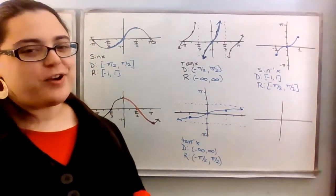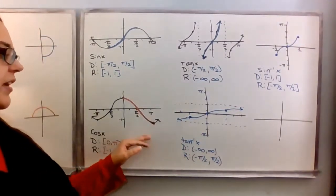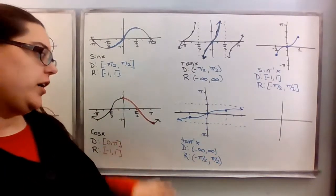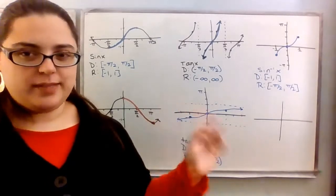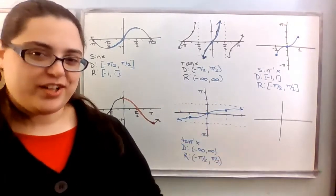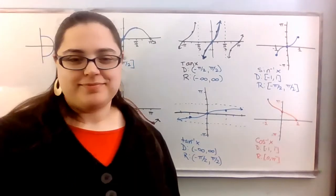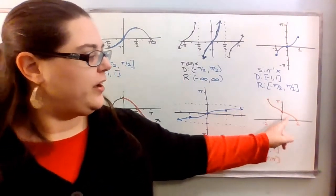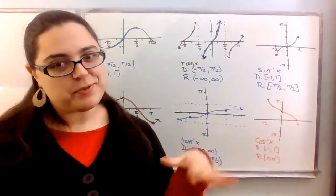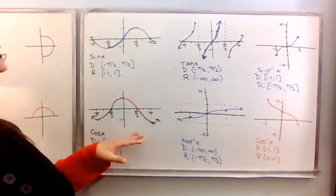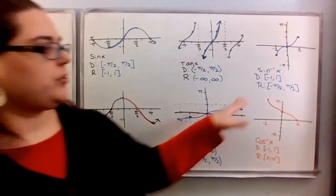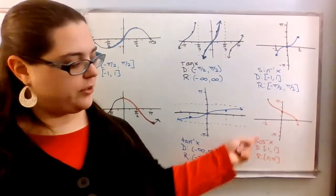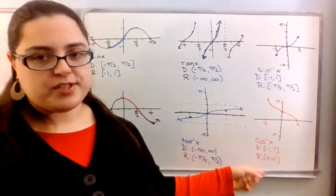We did inverse sine and tangent together — now try sketching inverse cosine using the reflection technique. When you're done, unpause the video to check. The inverse cosine curve is really only above the x-axis, which makes sense because cosine has a different restricted domain of zero to pi. Inverse cosine has a domain from negative one to one and a range from zero to pi.